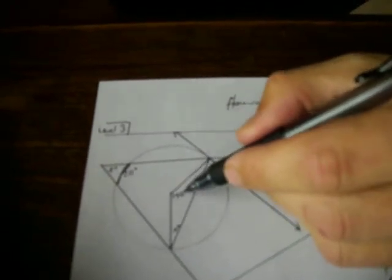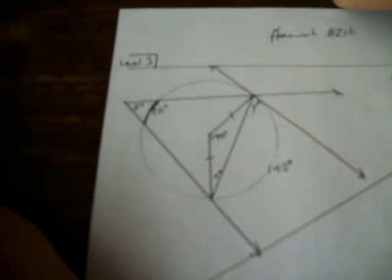For instance, this central angle here is 140 degrees. And what that means is that this arc length will also be 140 degrees. What we also know is that this is a radius and that this is a radius, meaning that this is an isosceles triangle.